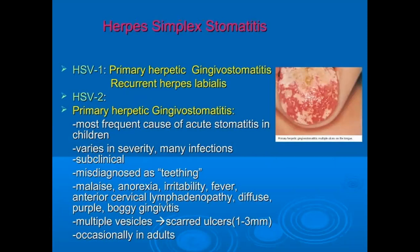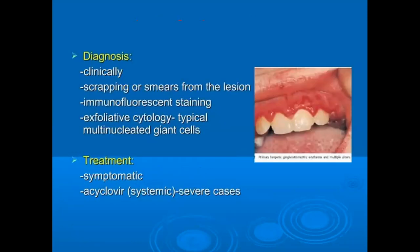There are two types: the first is primary herpetic gingivostomatitis and recurrent herpes labialis. Primary herpetic gingivostomatitis is mostly seen in children but can sometimes occur in adults, and it is often misdiagnosed as teething. Diagnosis is mainly clinical and treatment is symptomatic. Acyclovir is also recommended in severe cases.